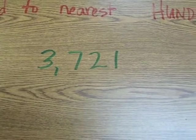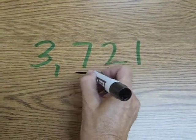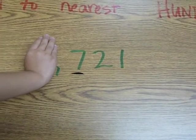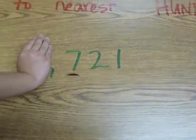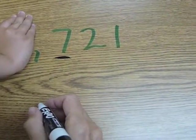Since we're rounding to the nearest hundred, let's underline our hundred and think about it. Pretend like there isn't a thousand. Pretend it's just 721. What two hundreds is that between? 700 and 800.